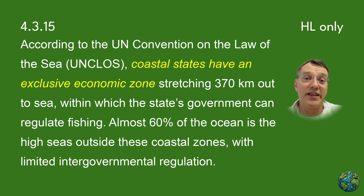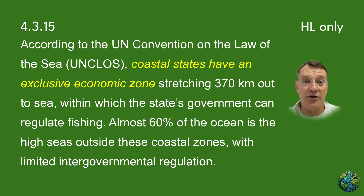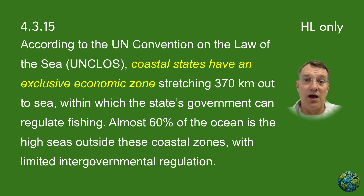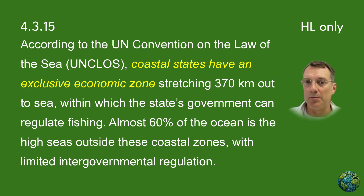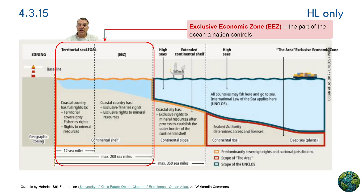The UN Convention on the Law of the Sea establishes important legal frameworks for marine resource management. Coastal states control exclusive economic zones (EEZs) that extend 370 kilometers from their shores, giving them authority to regulate fishing within these areas. However, almost 60% of the ocean lies in international waters with limited governance, creating challenges for managing migratory species and addressing global environmental problems like overfishing and pollution. EEZs represent a compromise between national sovereignty and international cooperation in ocean management, giving coastal nations economic rights while maintaining principles of freedom of navigation. Fish don't respect political boundaries, so managing migratory species requires international cooperation. The system also creates potential for conflicts when nations disagree about boundary locations or fishing rights.